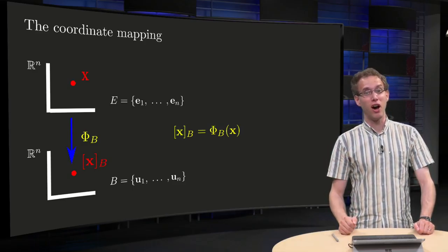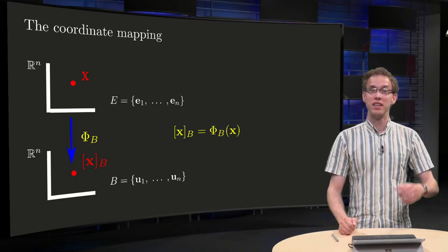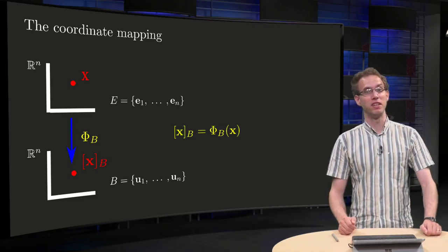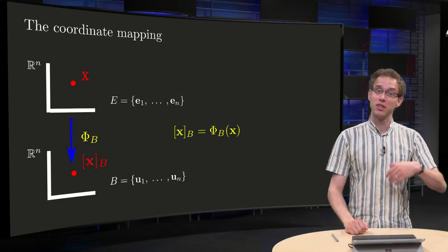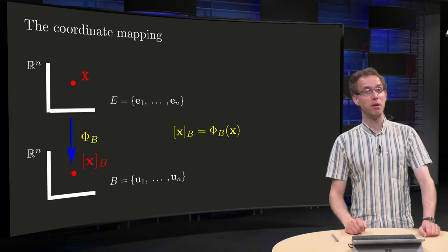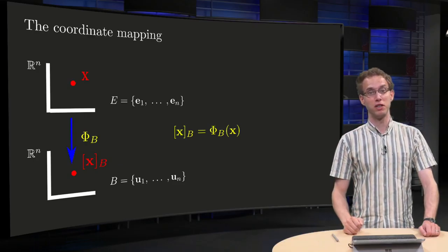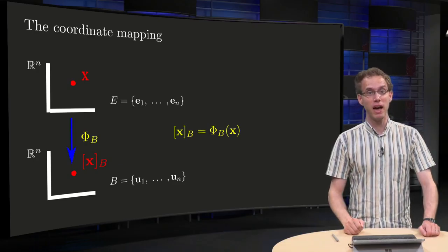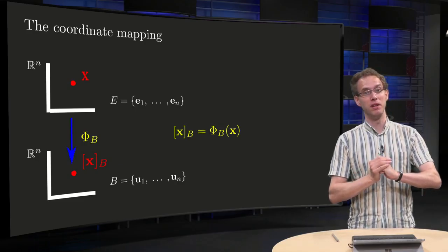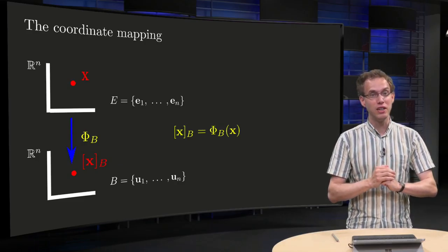If your vector space is Rn with a standard basis, this mapping is implemented by matrix PB. And that's really nice, because this allows us to choose any basis B for Rn we like, and then we use the matrix PB to find our original x. How can we find this matrix PB? That is what you will learn in this video.